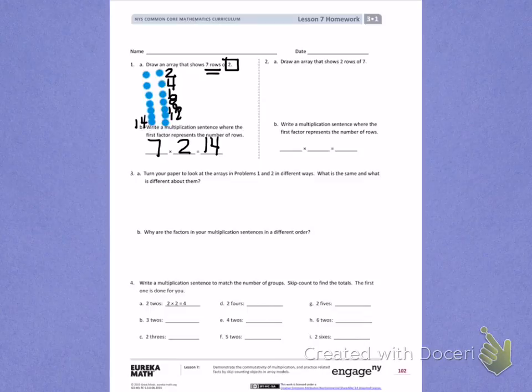Number 2. Draw an array that shows 2 rows of 7. So this time I'm going to have 2 rows with 7 in each row. 1, 2, 3, 4, 5, 6, 7. There is 1 row of 7.